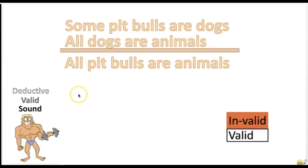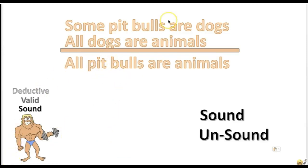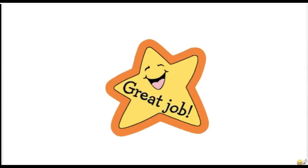Practice: 'Some pit bulls are dogs. All dogs are animals. Therefore, all pit bulls are animals.' Valid? No — it's invalid. The conclusion that would validly follow is that some pit bulls are animals. Sound? It's unsound — the argument is invalid, and all invalid arguments are unsound.